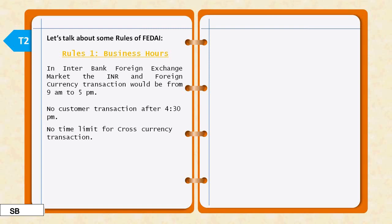Cross-currency transactions have no time bound because cross-currency is not available in the Indian market — it is available in foreign markets. So when the Indian market is closed, the cross-currency market may still be open. For example, if a customer wants Japanese Yen, the bank cannot get Japanese Yen in the Indian market. The bank has to go to the Tokyo market to buy Yen. Since Indian rupees don't work in Tokyo, the bank converts the rupees to dollars first, then goes to Tokyo to buy Yen for the customer.